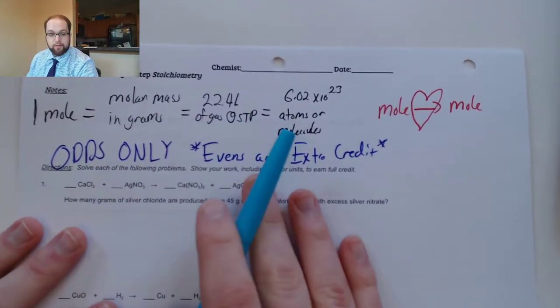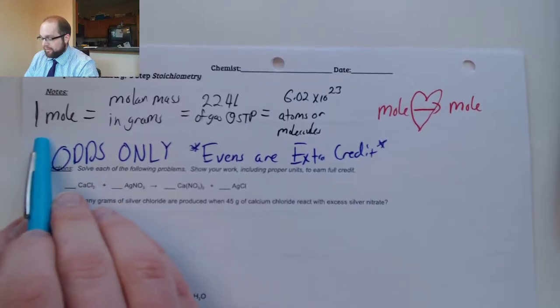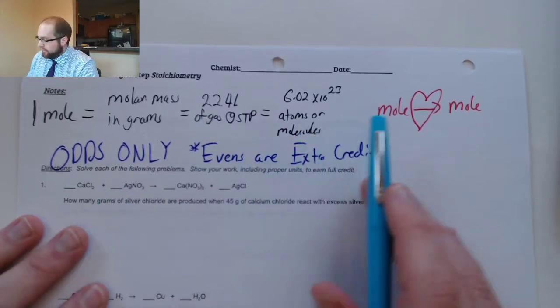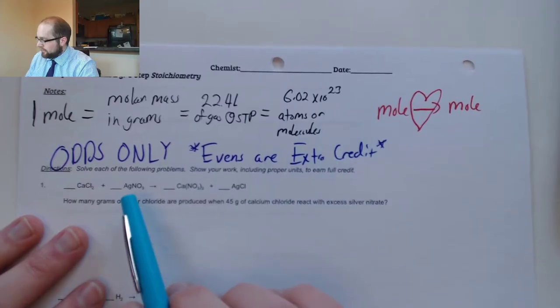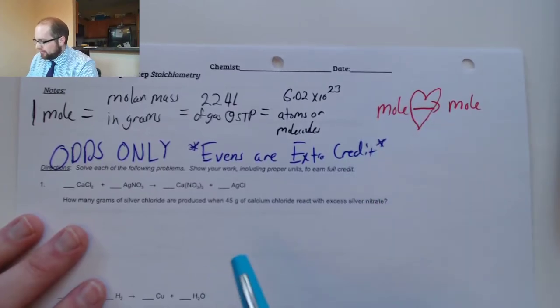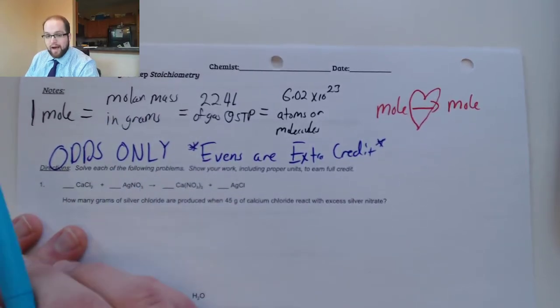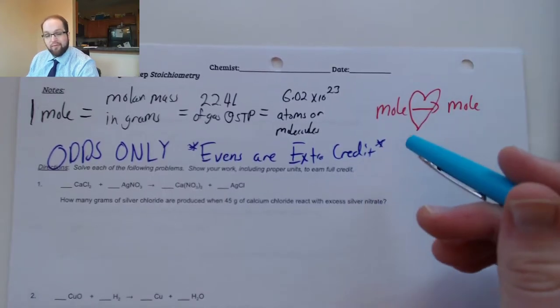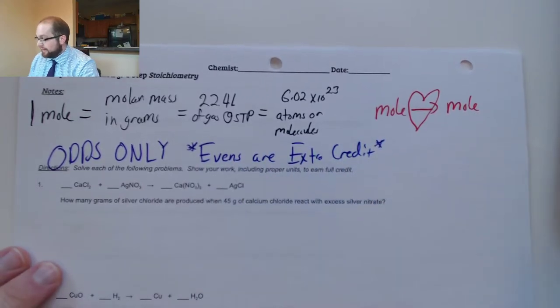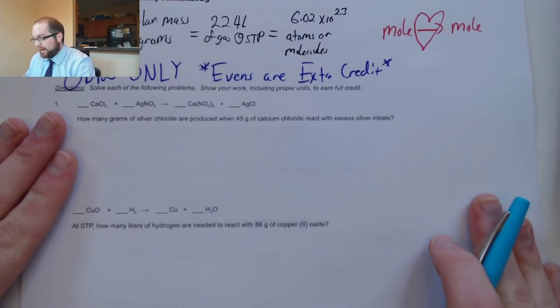Up here I have a couple of notes that I might recommend pausing and getting down if you don't already. That's to have reminders of our conversions. We know how to convert between moles, grams, liters, and atoms or molecules. I also want to remind you that we have a mole to mole conversion here. That is the heart of every stoichiometry problem. You're going to have to do one of these every single time you go through a stoic problem. Now, what you guys have been working on is your assignment is to do the odds only. If you do the evens though, you'll get some even more bonus points to help raise your grade with a little bit of extra credit.